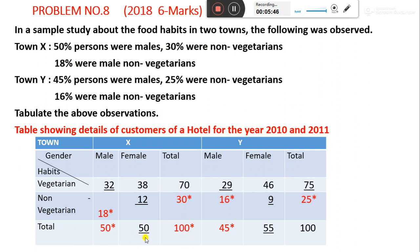They have given that 30% were non-vegetarian for Town X. Out of 100%, 30 are non-vegetarian, which means 70% are vegetarian. Then they have given that 18% were male non-vegetarian.